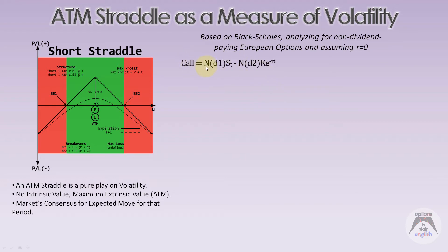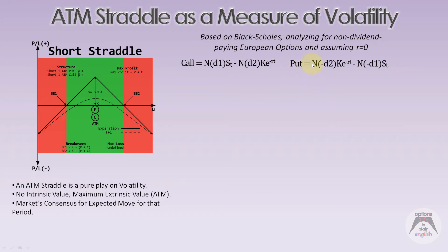The Black-Scholes call value equals N(d1) × S minus N(d2) × K × e^(−rT). Since we assume r = 0, the discounting factor e^(−rT) equals one and drops out. For the put, the value is N(−d2) × K minus N(−d1) × S. These are the full formulas we'll now simplify.